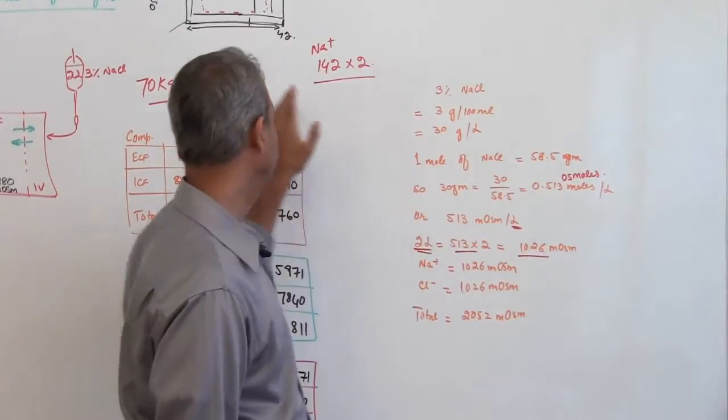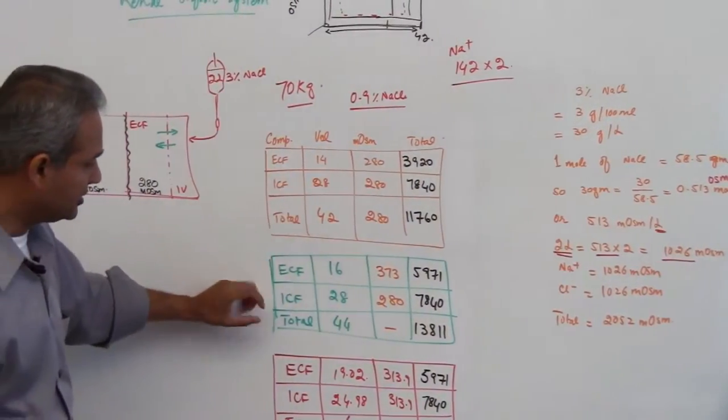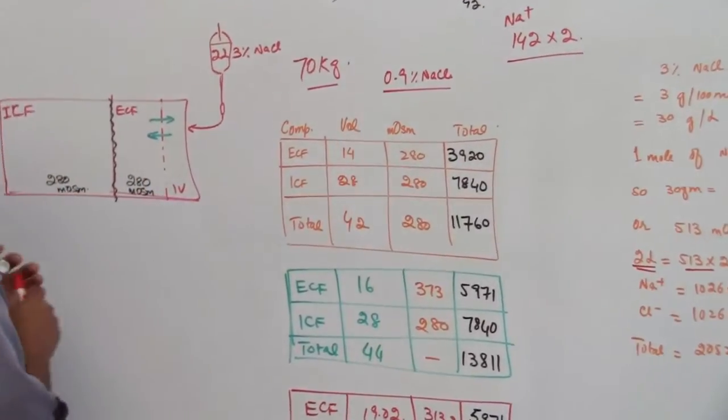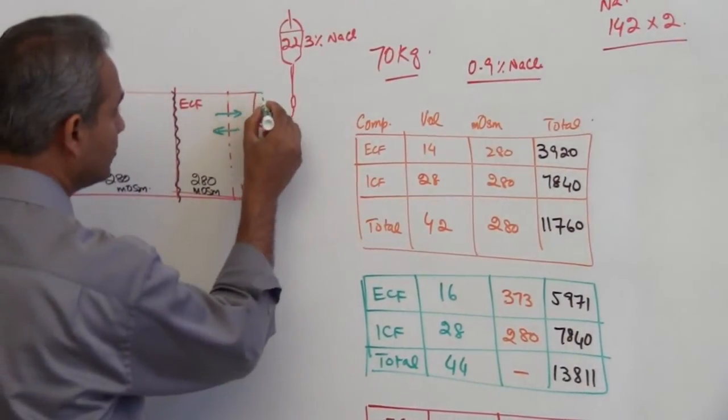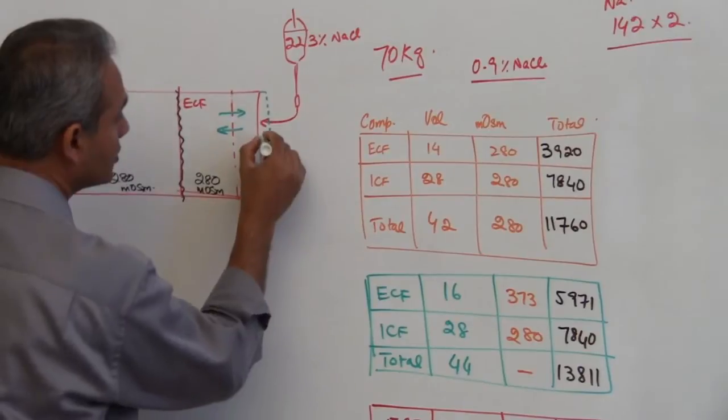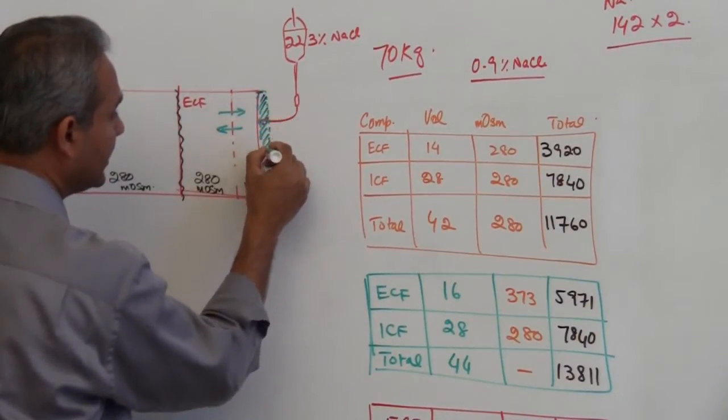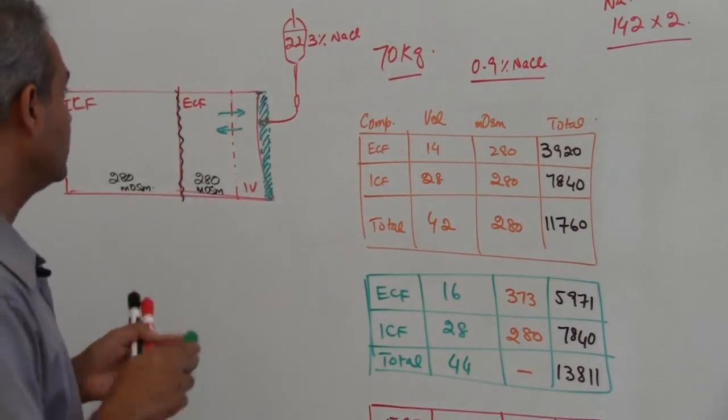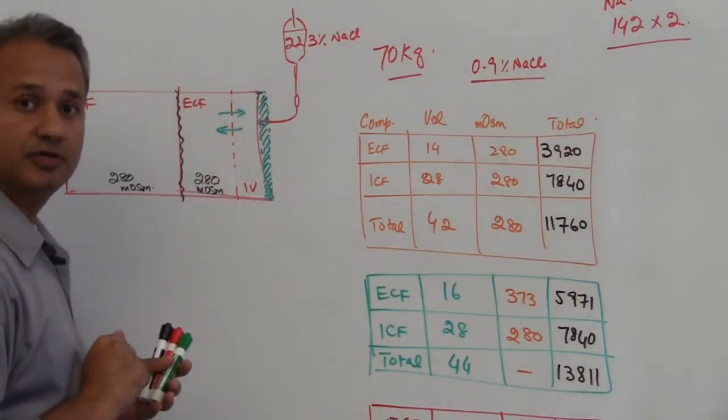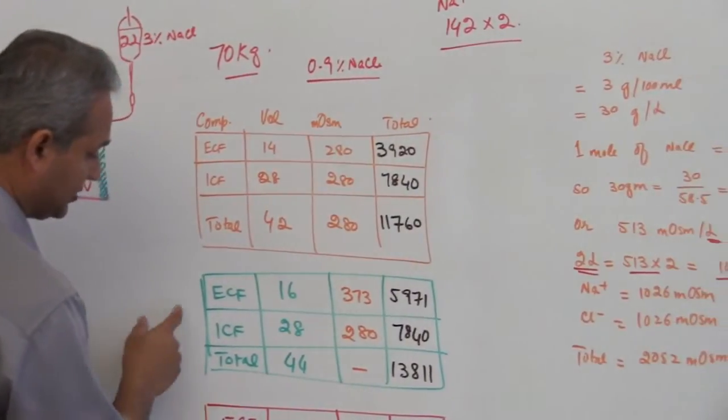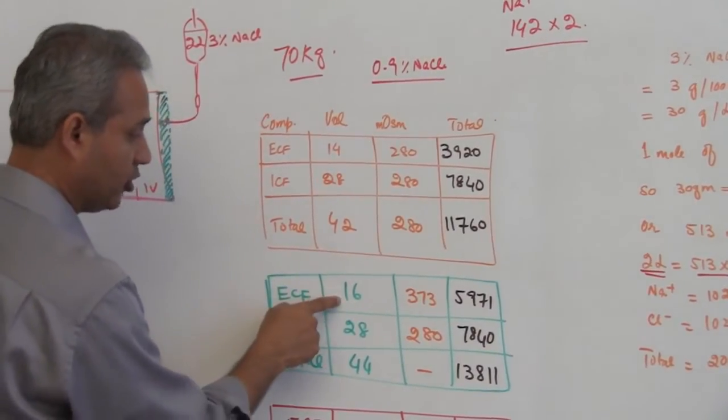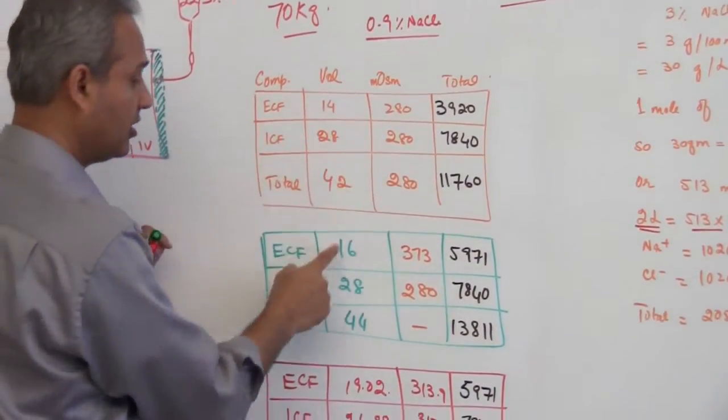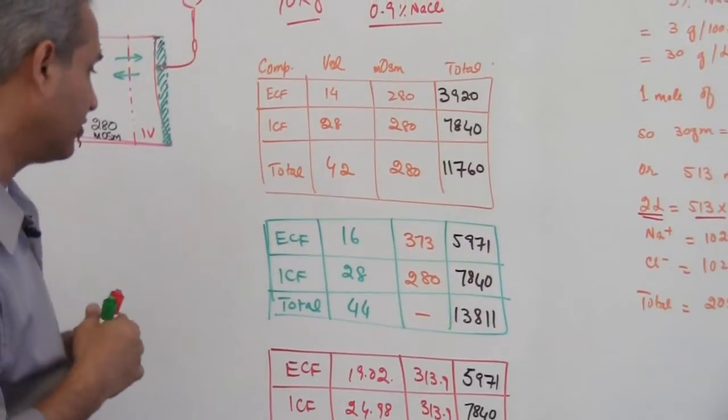In our example we are going to infuse about 2 liters of this. The second table shows that when we have infused the 2 liters, we have added 2 liters of fluid to the extracellular fluid. Extracellular fluid volume will now become 16 liters - it was 14 liters before, now it is 16 liters because we have added 2 liters of new fluid.